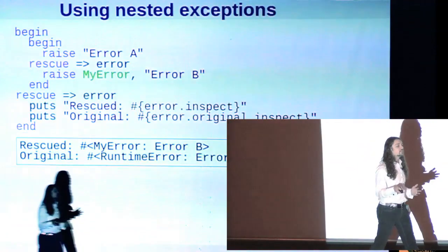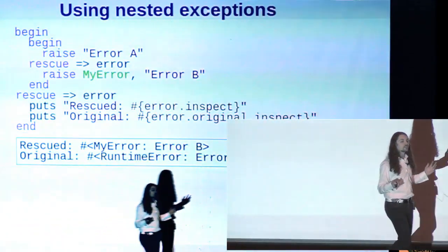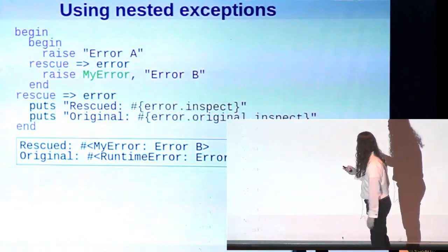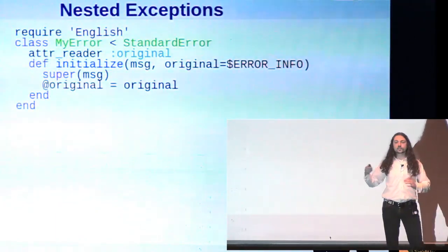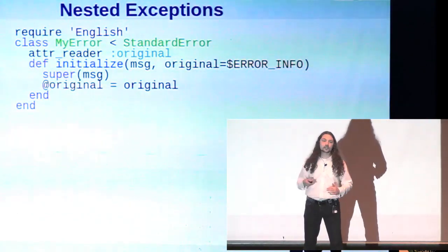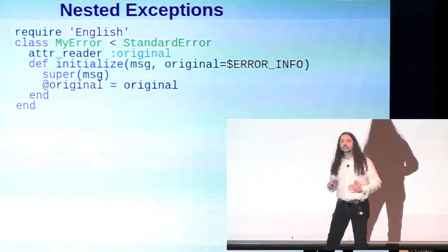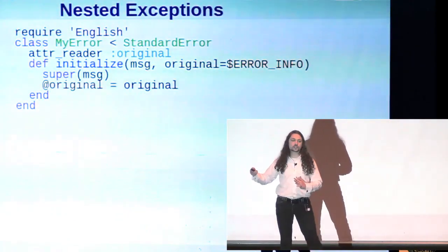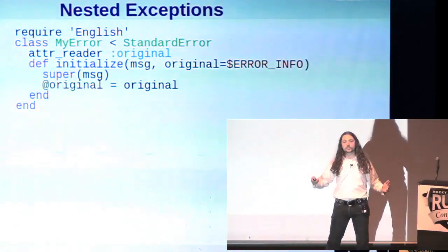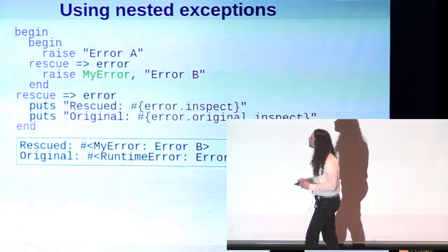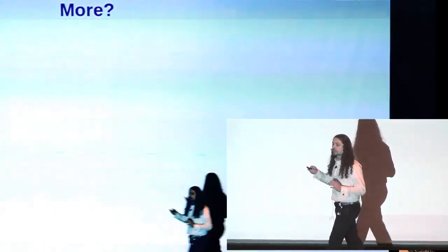Now wait a minute. We didn't actually set that reference. We didn't say error B, here's your reference to the original. How does this work? Well, if you look at how this class is defined, the default for that original attribute is error info. And so what this has done is it has sort of automatically picked up the current exception from the environment where it was created.